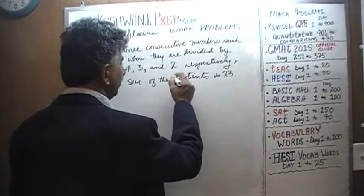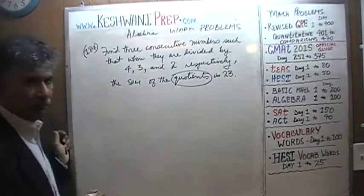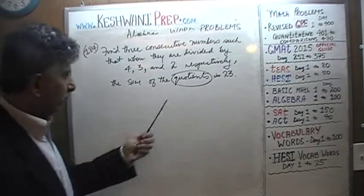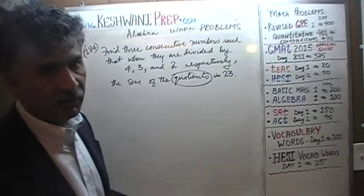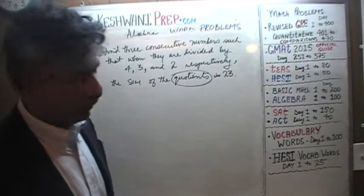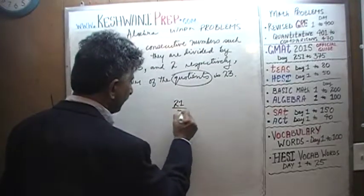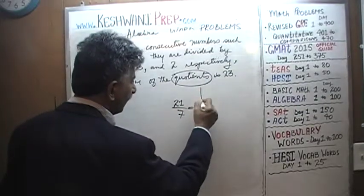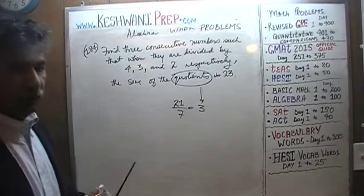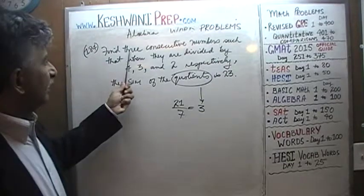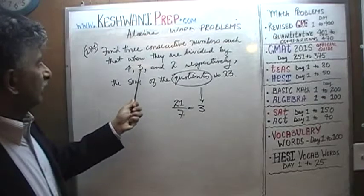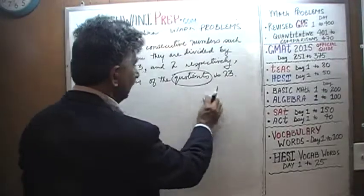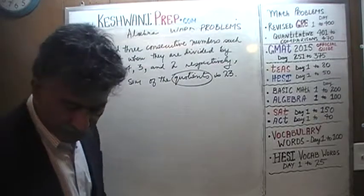First of all, what does quotient mean? We know from previous examples that quotient is just a fancy way of saying the result of division. For example, 21 divided by 7 is 3, and 3 is our quotient. So here, the quotient we get when we divide three consecutive numbers by 4, 3, and 2 — those three quotients have to add up to 23.